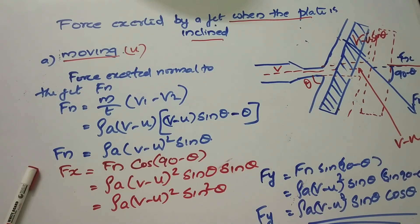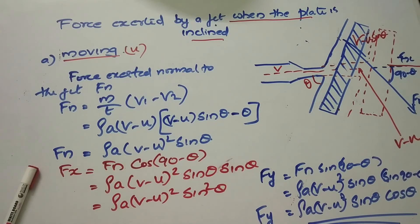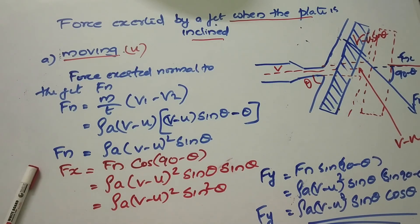To summarize: for the stationary plate, we use V in the equations, and for the moving plate, we use V minus U. The components otherwise follow the same form.